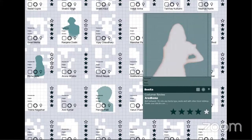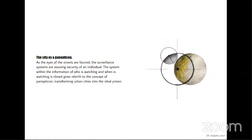The second operative concept is the city as a panopticon. As the eyes of the streets are blurred by the mediatized ear, surveillance systems assure one's security. The system in which the information of who is watching and when is closed gives rise to the concept of the panopticon, transforming urban cities into an idle prison. The second story is called 'The Known Surprise,' set in one of the gated communities of Goregaon, where an elderly couple discusses their neighborhood over a cup of tea.